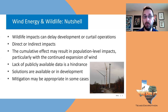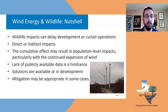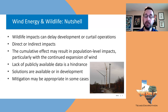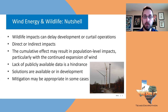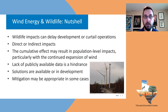Wind turbines can cause direct or indirect impacts. Direct impacts are collision events where the animal collides with the moving blades, resulting in fatalities or injuries. Indirect impacts relate to habitat — loss or alteration of habitat where a site is being developed — and can result in behavioral issues, where animals don't use an area they normally would, which can have deleterious impacts on those individuals.